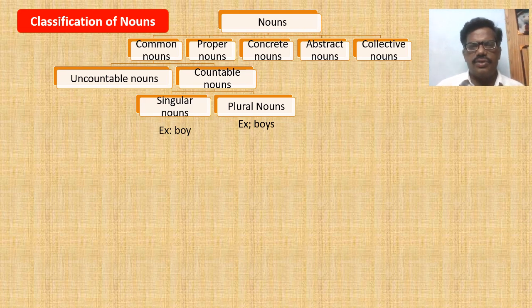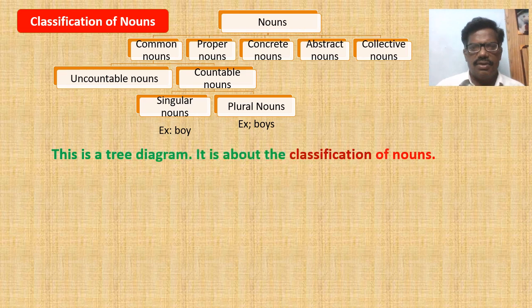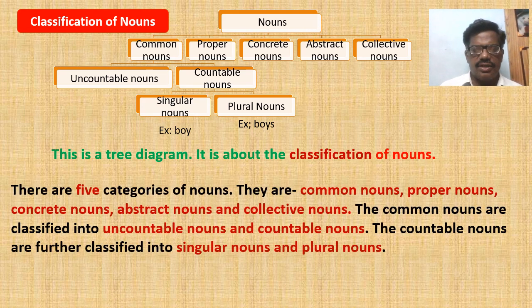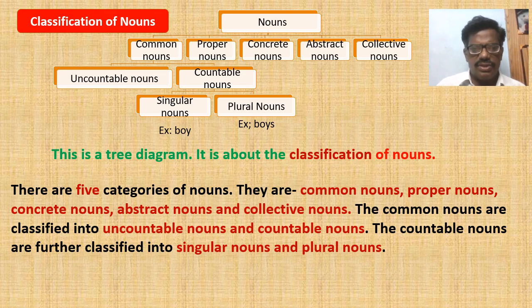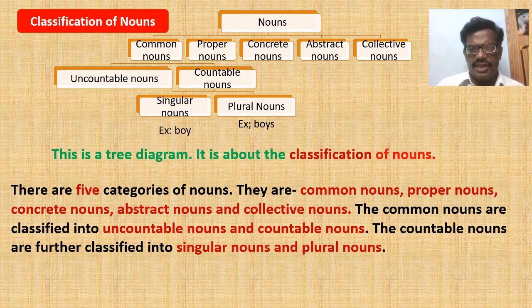This is the tree diagram about the classification of nouns. Introduction: 'This is a tree diagram. It is about the classification of nouns' — that is the heading of the tree diagram. There are five categories of nouns. They are common nouns, proper nouns, concrete nouns, abstract nouns, and collective nouns. The common nouns are classified into uncountable nouns and countable nouns. Further, the countable nouns are classified into singular nouns and plural nouns.